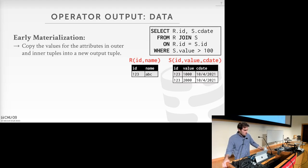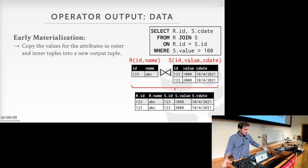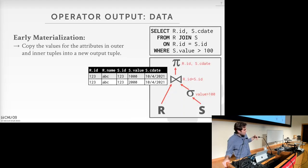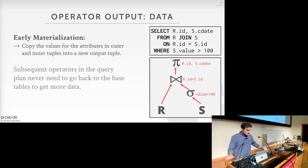As an example of early materialization: we're doing a join of these two tables, and we take the values from the outer relation R on the left-hand side, and the inner relation S, and merge them together into one contiguous tuple for each match. This intermediate result is what gets passed from the join operator to the projection operator above it. The advantage is that subsequent operators like projection never have to go back to the base tables to get more data — you have it all at once.